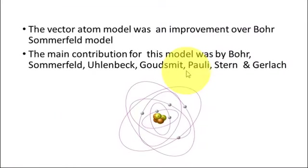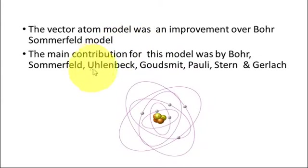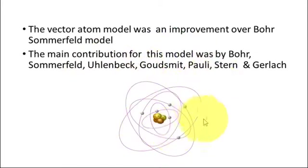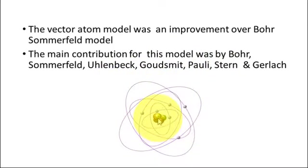The vector atom model is an improvement over the Bohr-Sommerfeld model — Bohr proposed circular orbits whereas Sommerfeld proposed elliptical orbits. As you can see in this figure, there are a number of electrons revolving around the positive nucleus. The center is the positively charged nucleus and the electrons are moving in different elliptical orbits around it.